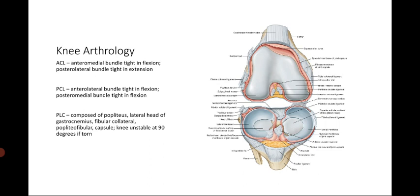The ACL is tight in flexion, especially the anteromedial bundle, and has a posterolateral bundle which is tight in extension. The PCL is the opposite: its anterolateral bundle is tight in flexion, and the posteromedial bundle is tight in extension. We also have the PLC, composed of the popliteus, collateral head of the gastrocnemius, fibular collateral, and popliteofibular capsule — when torn, the knee is unstable at 90 degrees. The mnemonic for the ACL is AMPLE: anteromedial, posterolateral, tight in extension.